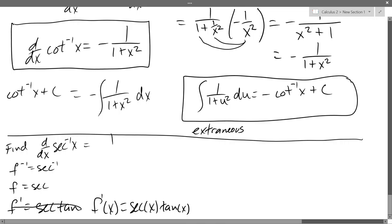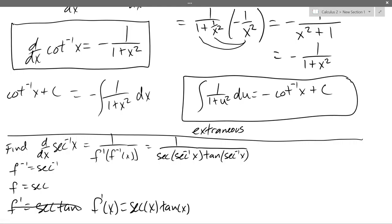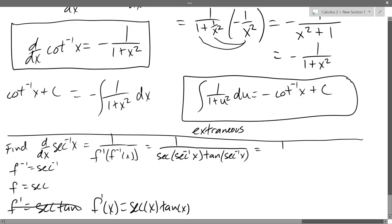We have 1 over F prime of F inverse of x, which is 1 over — F prime is secant tangent, but instead of x we put in secant inverse — so it's 1 over secant of secant inverse of x times tangent of secant inverse of x. Secant of secant inverse cancels out, so the first factor is just x. We still have to deal with tangent of secant inverse x.